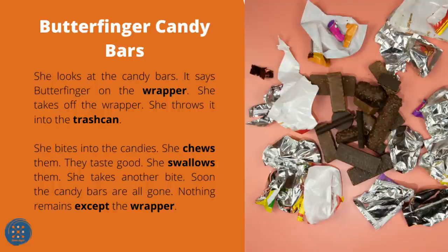Butterfinger Candy Bars. She looks at the candy bar — it says Butterfinger on the wrapper. She takes off the wrapper and throws it in the trash can. She bites into the candy and chews. It tastes good. She swallows and takes another bite. Soon the candy bars are all gone. Nothing remains except the wrapper.